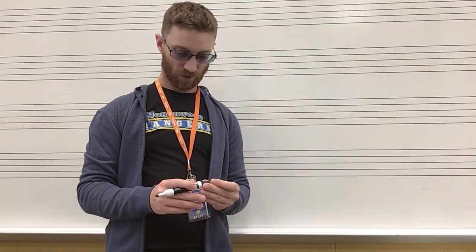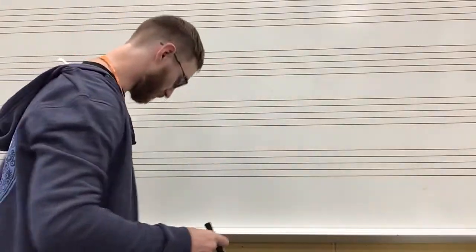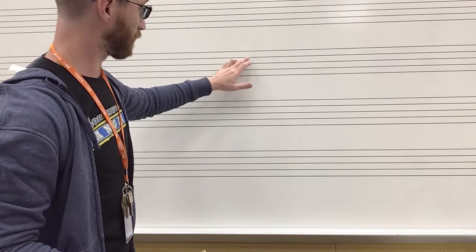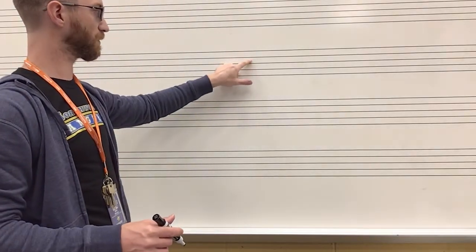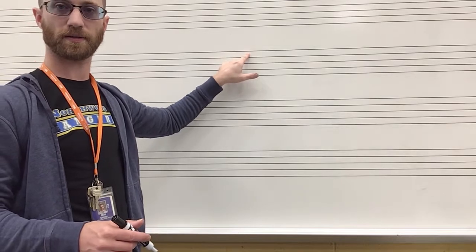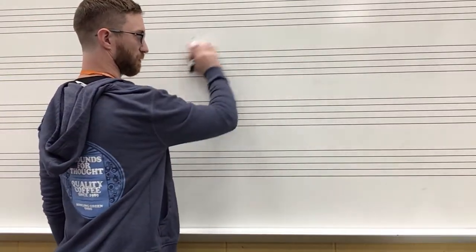All right, so first thing we need to look at is the staff. The staff is going to be one, two, three, four, five lines and one, two, three, four spaces. Okay, now to actually be able to put this into some sort of construct, we need to have lines.